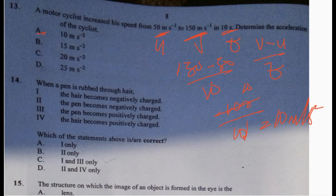Number 14: when a pen is rubbed through hair, what happens? The hair becomes negatively charged - no. The pen becomes negatively charged - that's true. The pen becomes positively charged - no. The hair becomes positively charged - that's true. Your answer is II and IV, which is D.